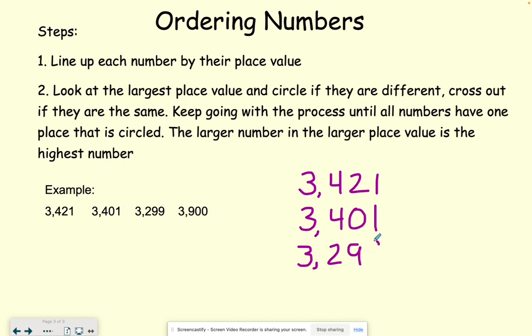And notice we're putting each place value stacked on top of each other. And last, we have three thousand, nine hundred. So sometimes when we have numbers that end in zeros, people want to say they're the smallest. But in truth, we have to look at the highest place value.